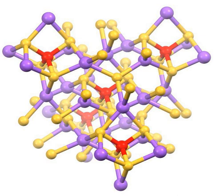Sodium thioantimoniate is an inorganic compound with the formula Na3-antimoniate sulfide. The nonohydrate of this material is known as Schlippe's salt, named after K.F. Schlipp. These compounds are examples of sulfosalts.